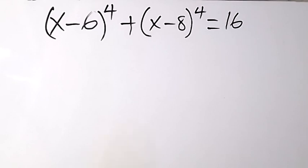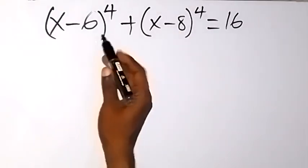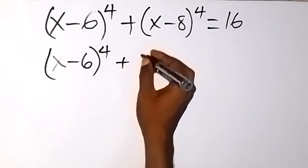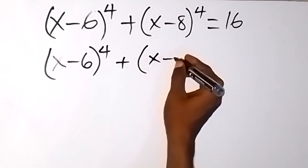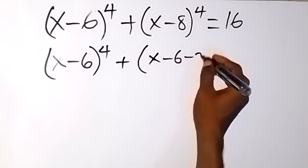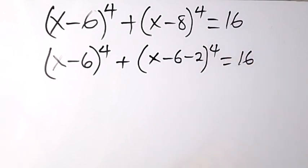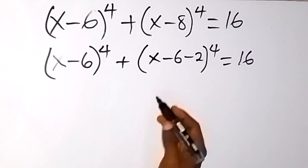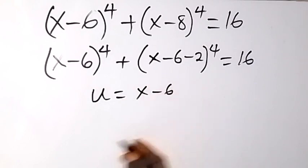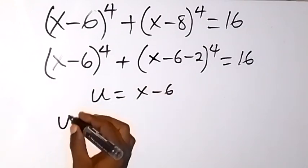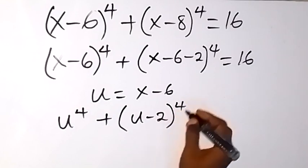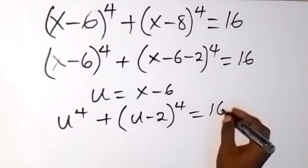Let's rewrite the second bracket to resemble the first bracket. We have (x minus 6) raised to power 4, then plus (x minus 6) — bringing out x minus 6 — so that we have minus 8, which becomes minus 2, raised to power 4 equals 16. Since x minus 6 is common, let's use the letter u to represent x minus 6. We can write: u raised to power 4 plus (u minus 2) raised to power 4 equals 16.